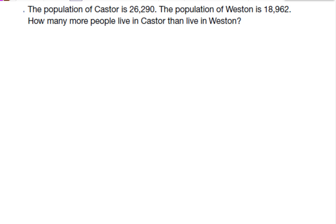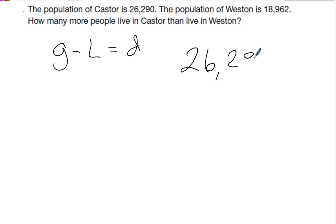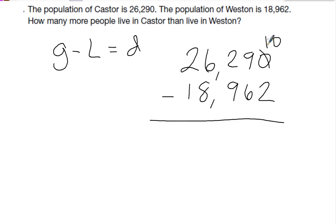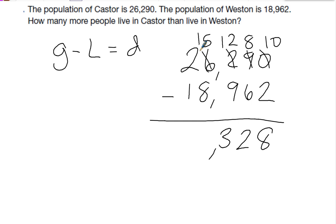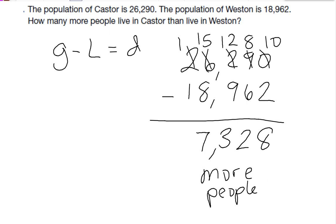The population of Castor is 26,290 and the population of Weston is 18,962. How many more people lived in Castor than in Weston? Again, greater minus lesser equals our difference. We take 26,290 minus 18,962. Borrowing as needed: 10 minus 2 is 8, 8 minus 6 is 2, 12 minus 9 is 3, 15 minus 8 is 7, and 1 minus 1 is 0. So there are 7,328 more people in Castor than in Weston.